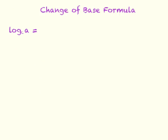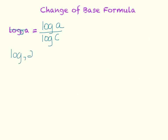The change of base formula is somewhat obsolete now since calculators can directly compute log base c of a. But it was useful when calculators could only do log base 10. Think of the argument a as on top and the base c as below: the formula says log base c of a equals log base 10 of a divided by log base 10 of c. For example, log base 7 of 2 becomes log of 2 on top divided by log of 7 on the bottom.